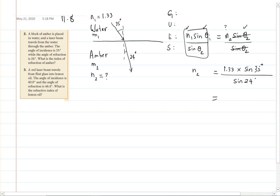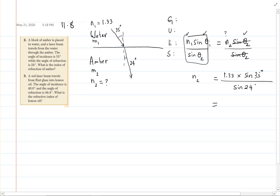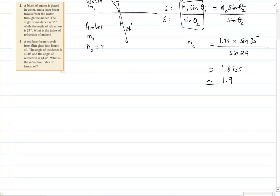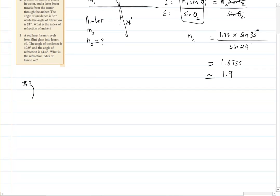On the calculator: 1.33 times sine 35, then divide by sine of 24 degrees — that equals 1.875. The answer given in the worksheet is rounded to two digits, so that is 1.9.